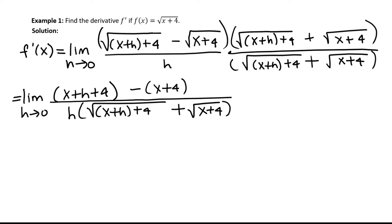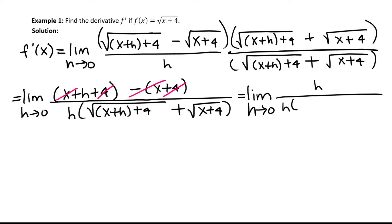Let's perform the subtraction. You have x plus h plus 4, minus x plus 4, leaving only h in the numerator. This becomes the limit as h approaches 0 of h divided by h times the square root of x plus h plus 4, plus the square root of x plus 4. The h in the numerator and denominator cancel — our goal is to eliminate that h in the denominator so we're not dividing by zero.